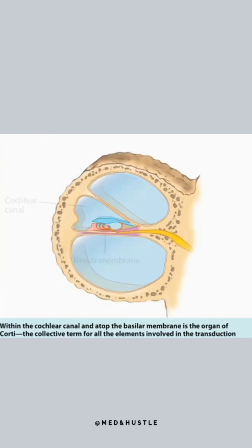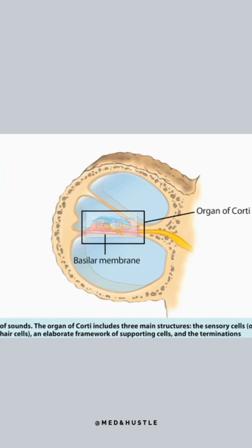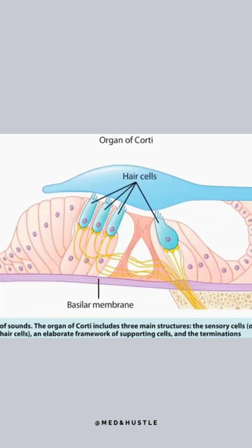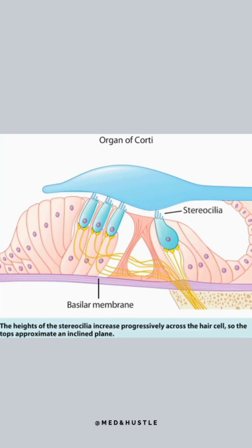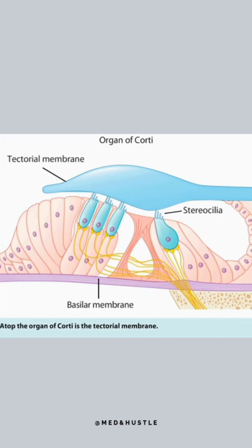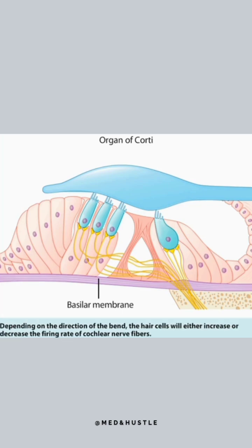Within the cochlear canal and atop the basilar membrane is the organ of Corti, the collective term for all the elements involved in the transduction of sounds. The organ of Corti includes three main structures: the sensory cells or hair cells, an elaborate framework of supporting cells, and the terminations of the cochlear nerve fibers. The heights of the stereocilia increase progressively across the hair cell, so the tops approximate an inclined plane. Atop the organ of Corti is the tectorial membrane, and the stereocilia of the outer hair cells extend into the indentations in the bottom of the tectorial membrane. The movements of fluid in the cochlea produce vibrations of the basilar membrane, which bend the stereocilia inserted into the tectorial membrane. Depending on the direction of the bend, the hair cells will either increase or decrease the firing rate of cochlear nerve fibers.